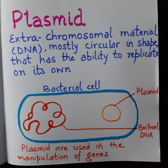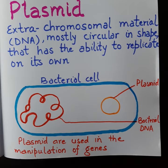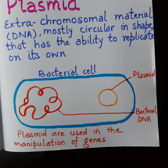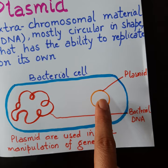On the other hand, plasmid is the extra chromosomal material that is DNA, which is mostly circular in shape and has the ability to replicate on its own. You can see here is a bacterial cell with chromosomal DNA and the extra chromosomal material, which is called a plasmid. This plasmid is used in the manipulation of genes.